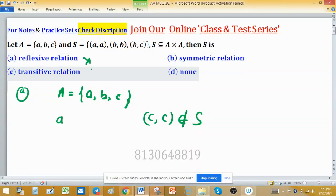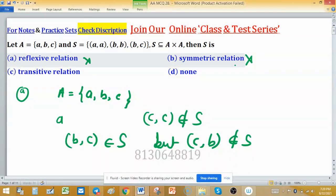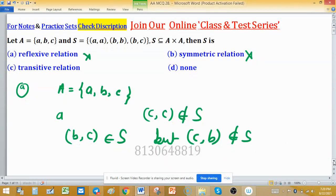Now check symmetric. As you can see, (b,c) is in set S or in relation S, but (c,b) is not in S, so this relation is not symmetric. Now we need to check transitive.